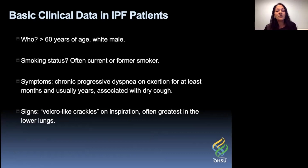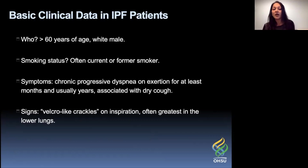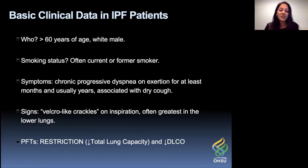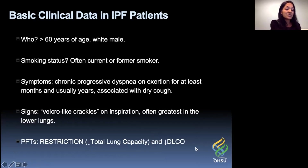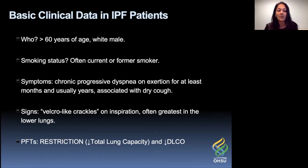IPF and UIP, like most interstitial lung diseases, are restrictive lung diseases, which means the lung has a hard time opening up. So when the patient breathes in, it sounds exactly as though you're opening the Velcro on a pair of sneakers — the lung makes the sound with inspiration, and when they breathe out, it sounds very normal. On PFTs, you would see restriction with a reduced total lung capacity and a reduced diffusion capacity.